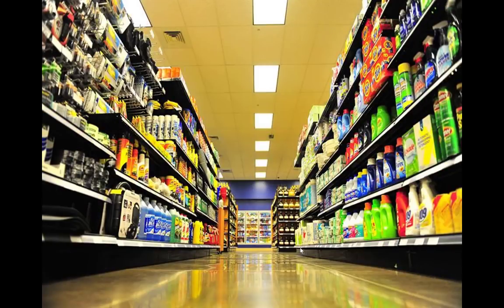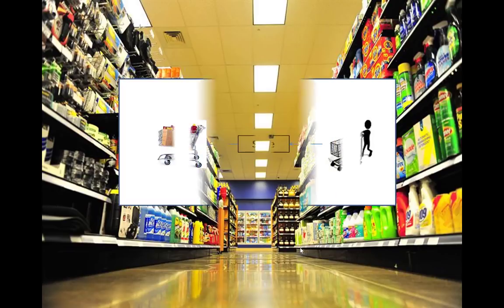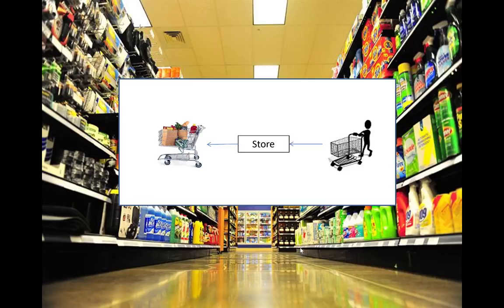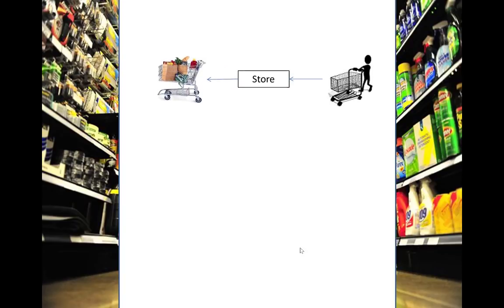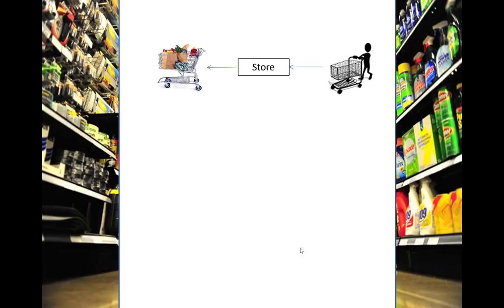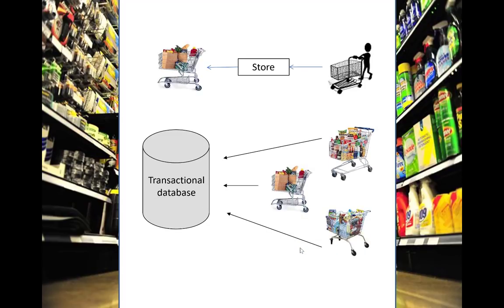Suppose you have a large store with many items to sell, maybe tens of thousands, if not hundreds of thousands of different articles. This can be a brick-and-mortar kind of store or an online store. A customer comes and buys a set of these items. Of course, you don't have just one customer, but perhaps millions, and each buying different sets of items. These form transactions that are stored in a transactional database.